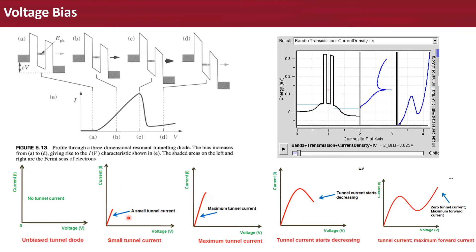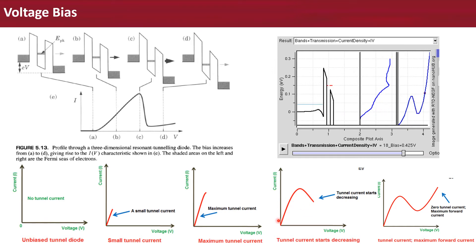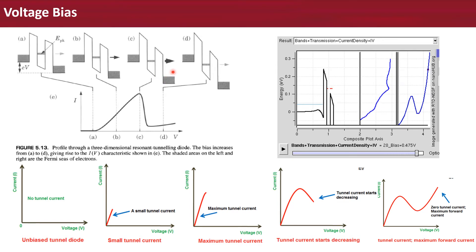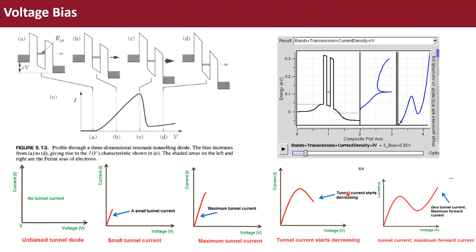It shows a small tunneling current increasing until it reaches the maximum tunneling current. The second region is the negative resistance region, which is the most important region for IV operations in resonant tunneling diode devices. As the bias increases further, the first confined state becomes lower in energy and gradually goes into the energy range of the band gap, so the current decreases. At this time, the second confined state is still too high in energy to conduct any significant current, so the tunneling current starts decreasing.